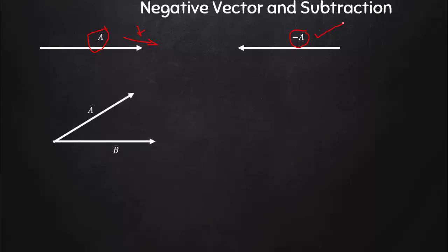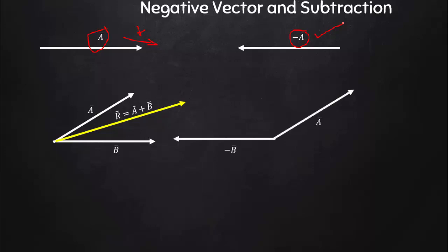This is important for subtraction. If A-bar and B-bar are two vectors and I need to add them using the parallelogram law, I get R-bar = A-bar + B-bar. Now, if instead of B-bar I take minus B-bar, I get a different resultant. Using the parallelogram law, the resultant of A-bar and minus B-bar is actually A-bar minus B-bar — this is vector subtraction. So to subtract a vector, take its negation and then find the resultant with the normal procedure — use the triangle law or parallelogram law.